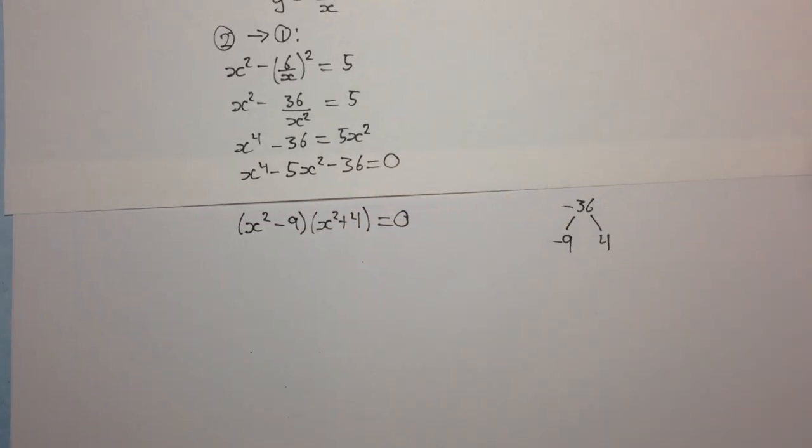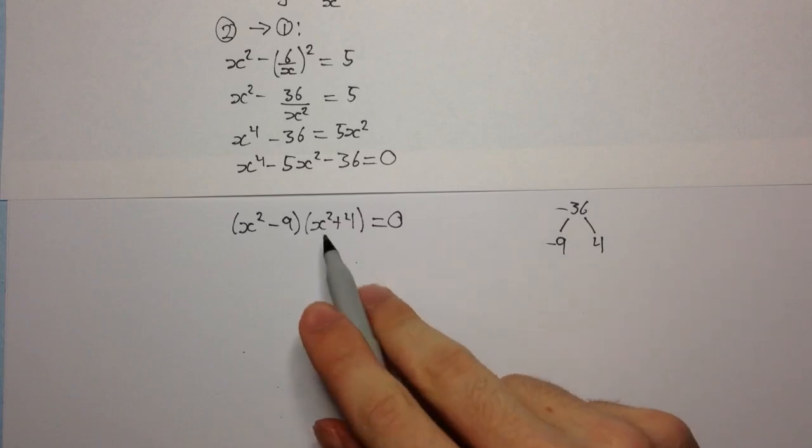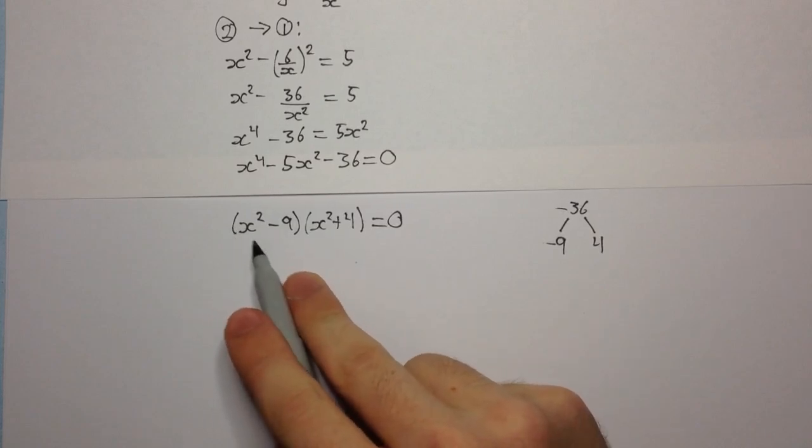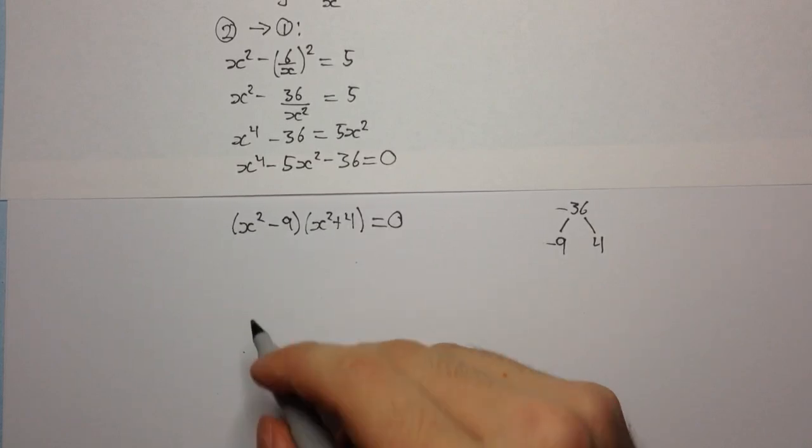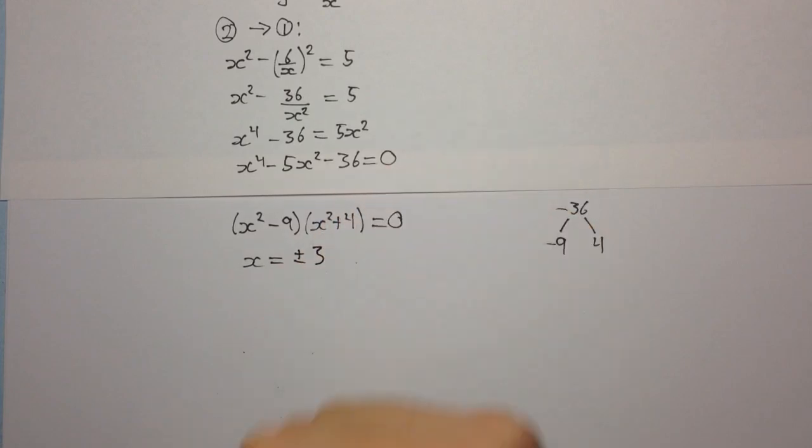Now remember the complex number was z equals x plus iy and in that number x and y were real. So when we solve this, we're going to get x equals 2i from the second factor but that's not a real number. So we're going to only use the solutions from x squared minus 9 equals 0. And so this means that x is equal to plus or minus 3.